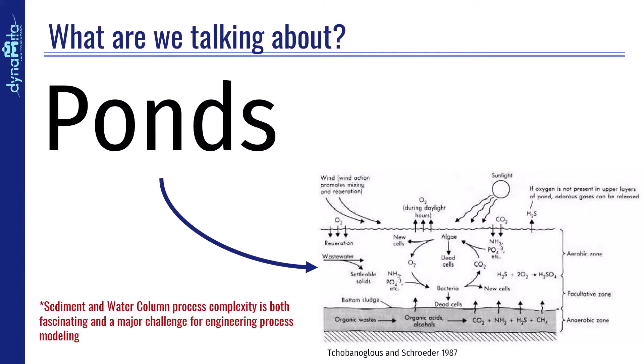Ponds are sophisticated systems, as illustrated in this schematic. Sunlight drives algal growth, which provides oxygen for biological oxidation of influent organics. Wind action across the surface is also a significant source of oxygen in the water column, and in the underlying sludge layer or sediment layer.